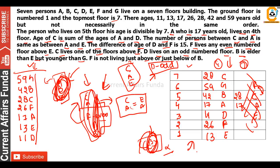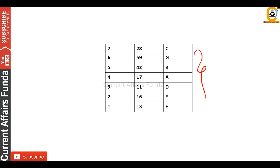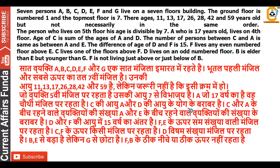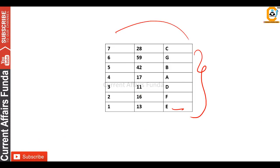The final floor arrangement from bottom to top is: E, F, D, A, B, G, C. It's better to fix both variables — floor and age — because if you don't, there will be a lot of confusion and your answers will be wrong. So always fix both variables. Here is the fair solution: E on floor 1, then F, D, A, B, G, and C on floor 7.